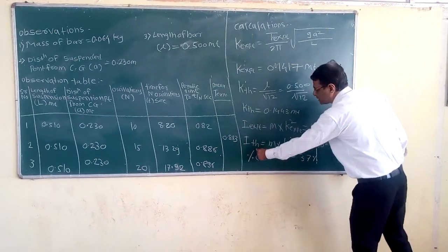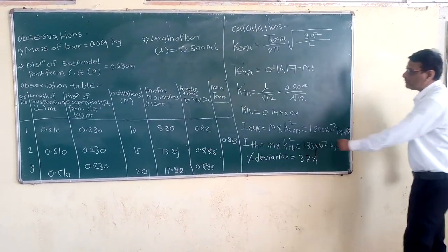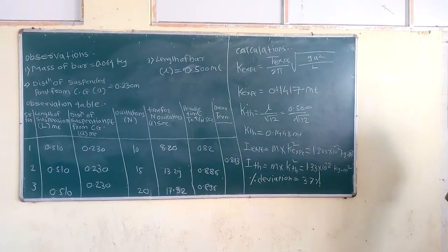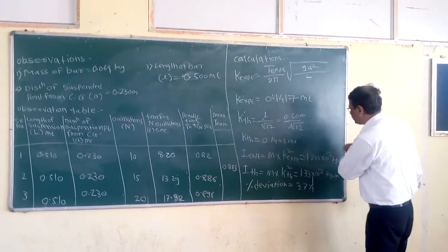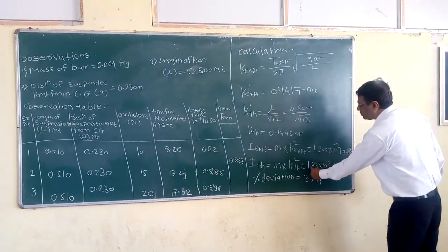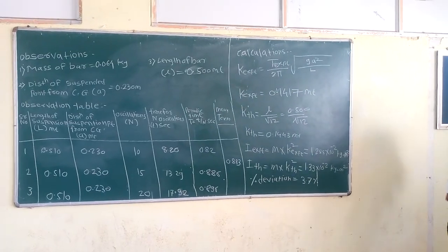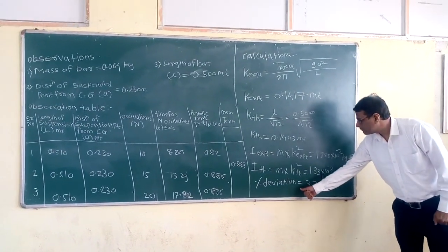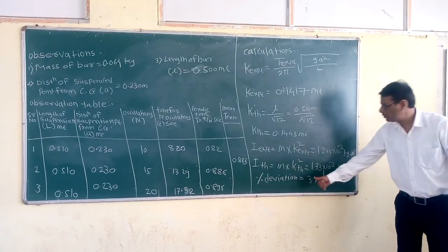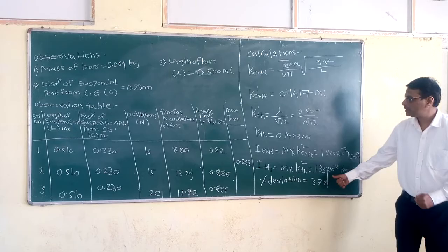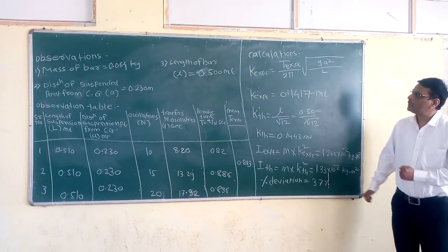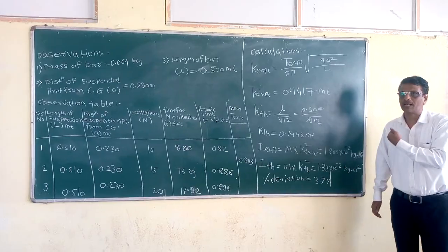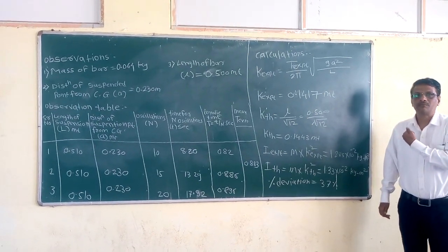Let us see the percentage deviation in the results. It is (I theoretical − I experimental) / I theoretical = (1.33 × 10⁻² − 1.285 × 10⁻²) / 1.33 × 10⁻², giving a percentage deviation of 3.7%. Since it is below 10%, the theoretical results and experimental results are in very good agreement. In this way, our aim has been achieved. Thank you very much.